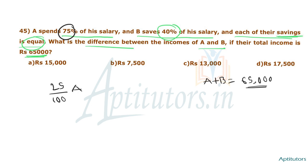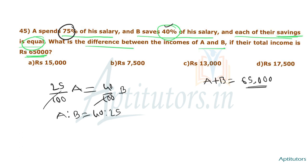Savings of A equals 25% of A's salary. B saves 40% of B's salary. Since their savings are equal, 25% of A equals 40% of B. Therefore, A to B ratio equals 40 to 25, which simplifies to 8:5.